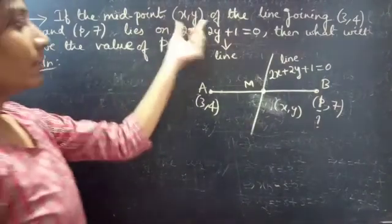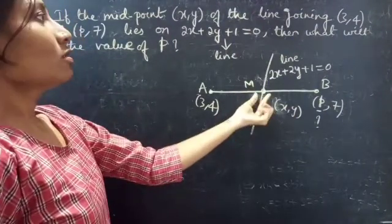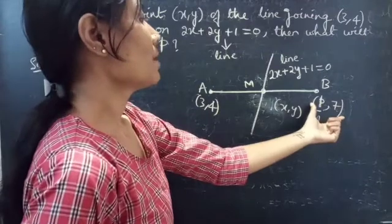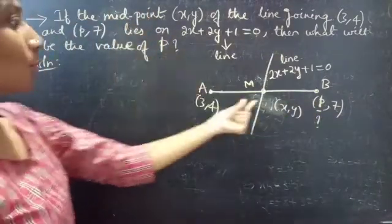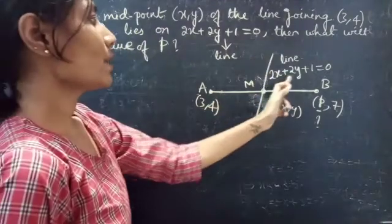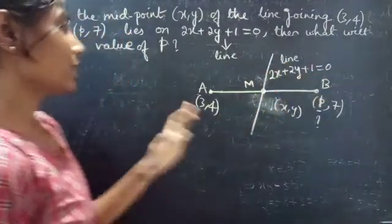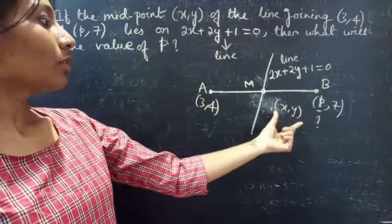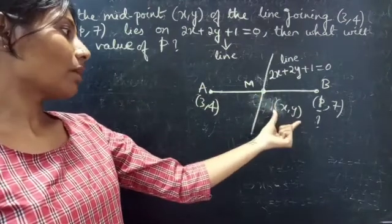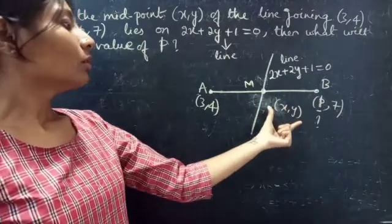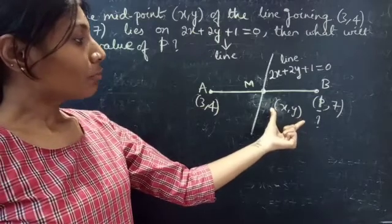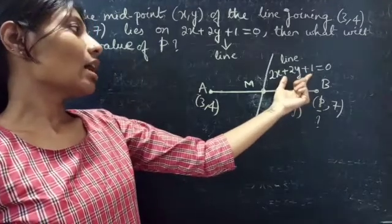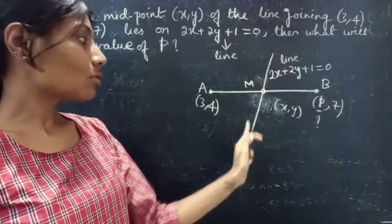We are given a midpoint (x, y), naming it N, of the line joining point (3, 4) and point (P, 7), which lies on the line 2x plus 2y plus 1 equals to 0. We have to find the value of P. So firstly, we will find the value of the midpoint (x, y), and then we will apply this point — that is the values of x and y — on the line, since the point lies on the line.